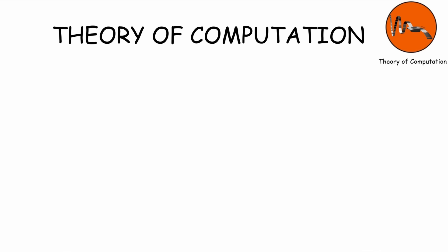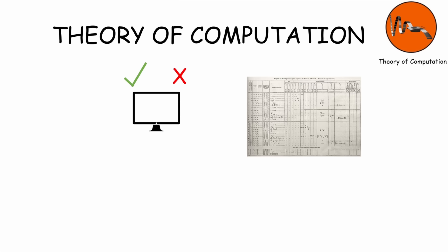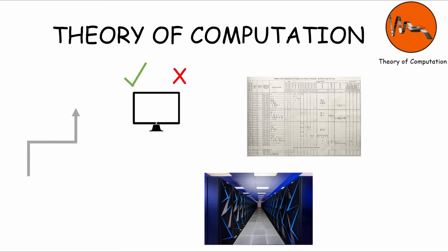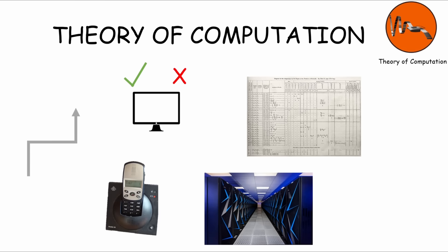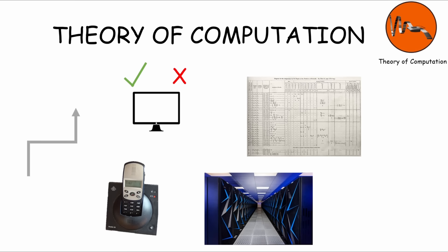The theory of computation is a set of ideas that help us understand what computers can and cannot do. It explores how problems can be solved using algorithms, which are step-by-step instructions, and looks at the limits of what can be achieved with different types of computational devices. It's like figuring out the rules and possibilities of how computers work and what they're capable of.